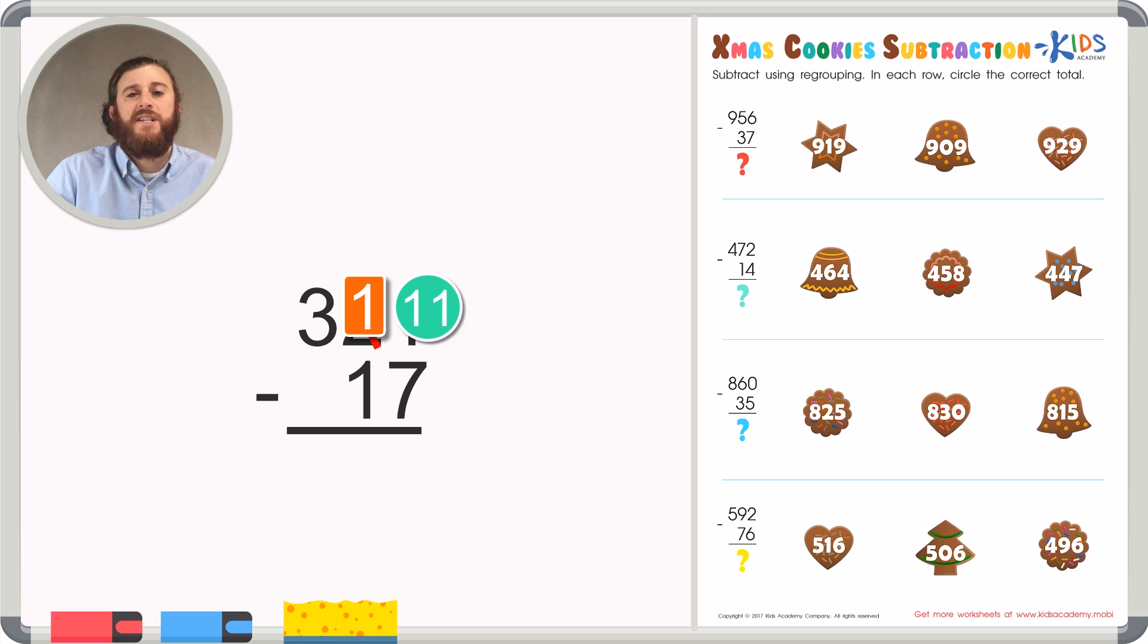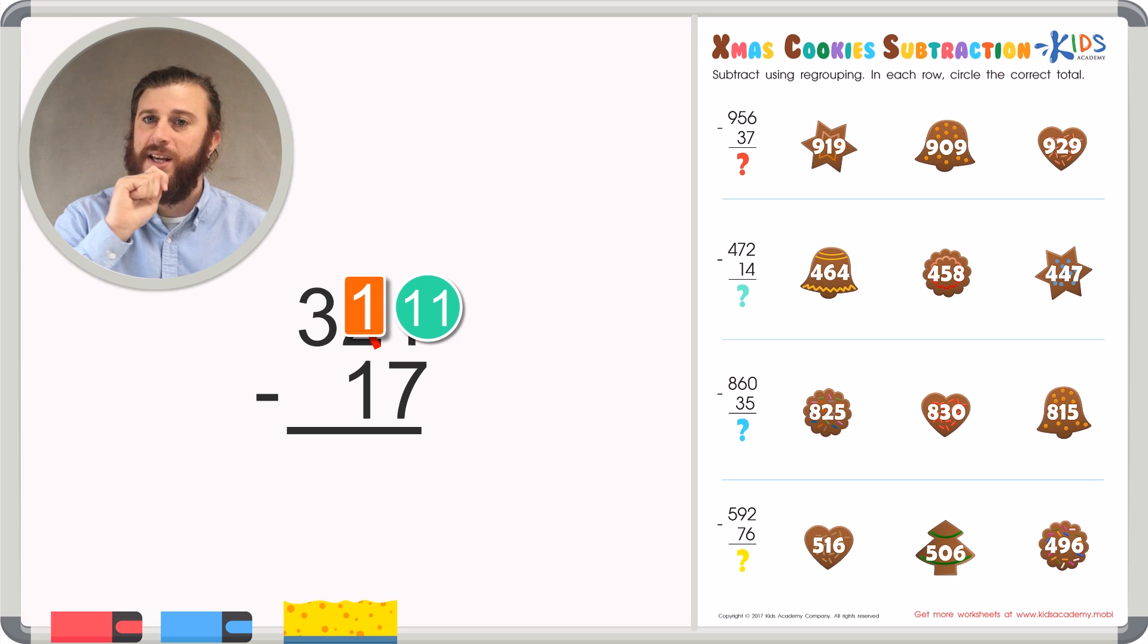Now you can take away 7 from 11 because 11 has 7 to give. So let's count upwards from 7 to 11 to see the difference between those two numbers. 7, 8, 9, 10, 11. 11 minus 7 is 4.